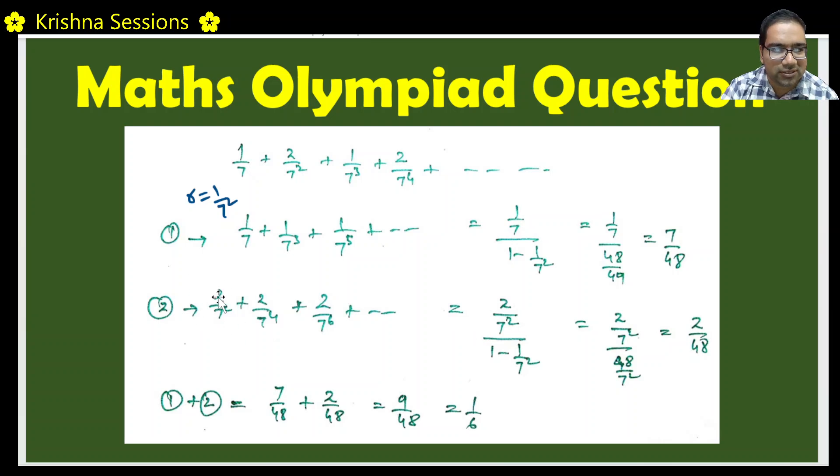So what is the sum of this? The first term 2 by 7 square by 1 minus 1 by 7 square. This is 2 by 7 square by 48 by 7 square. 7 square will get cancelled 2 by 48.